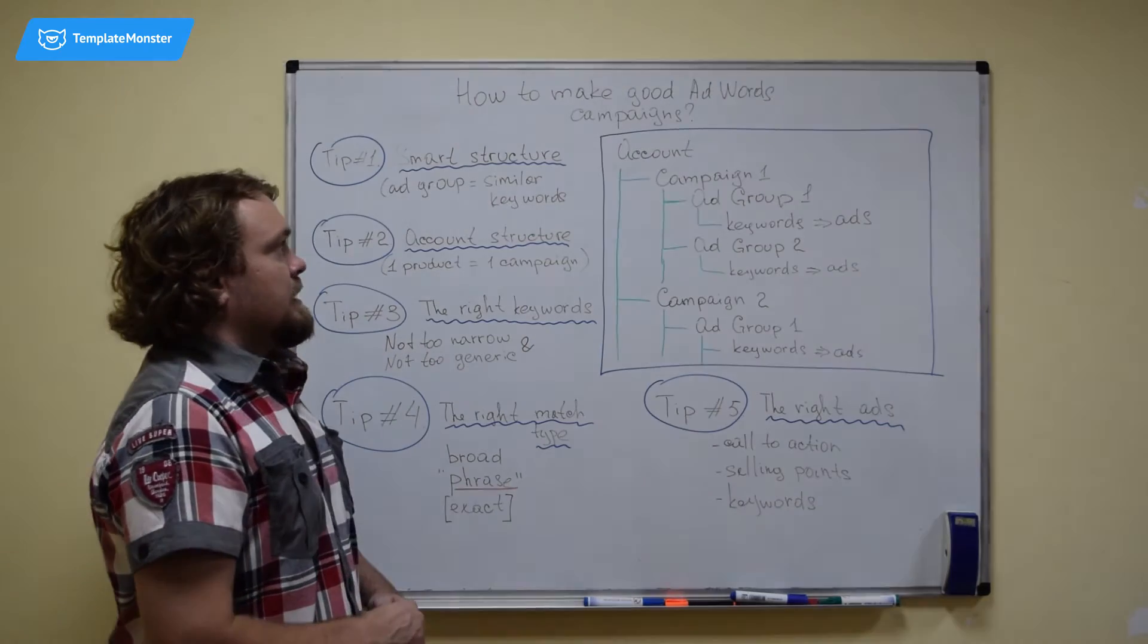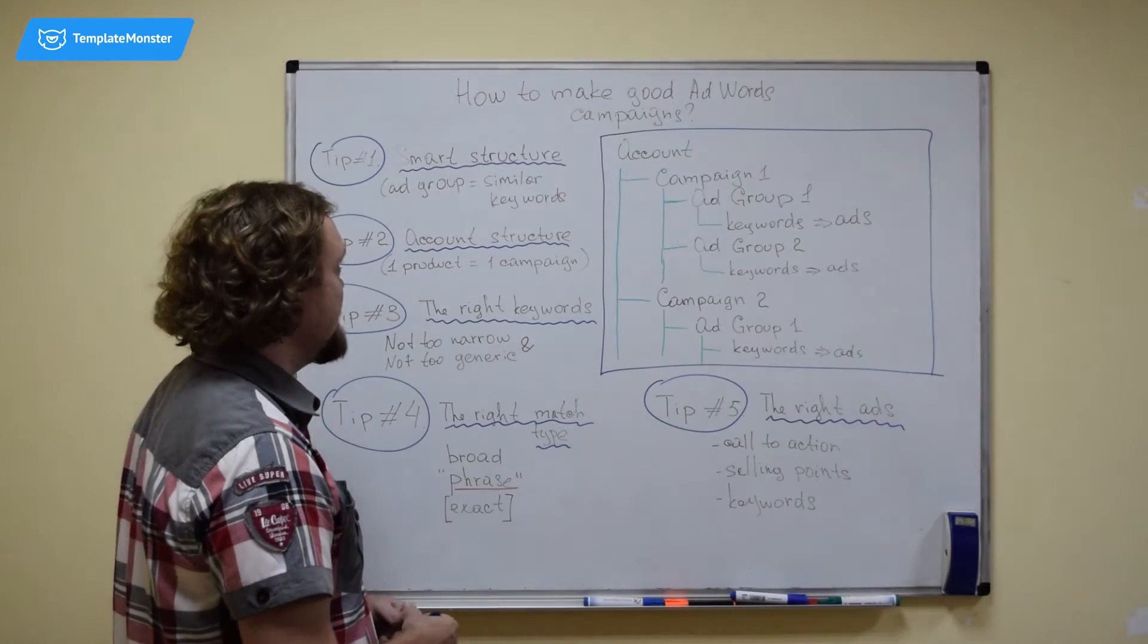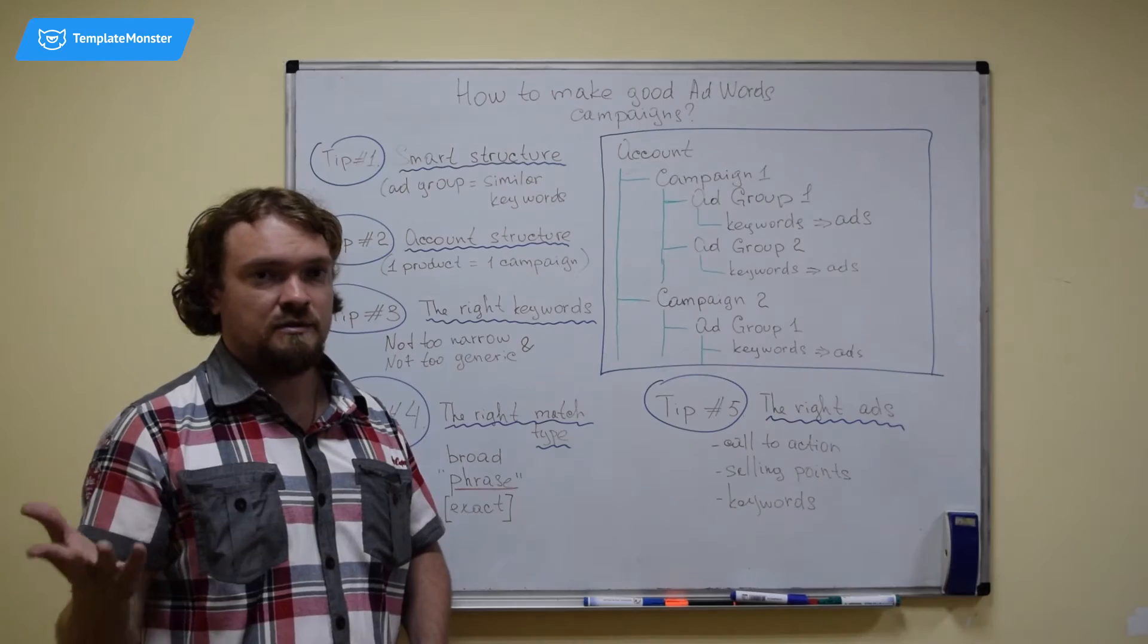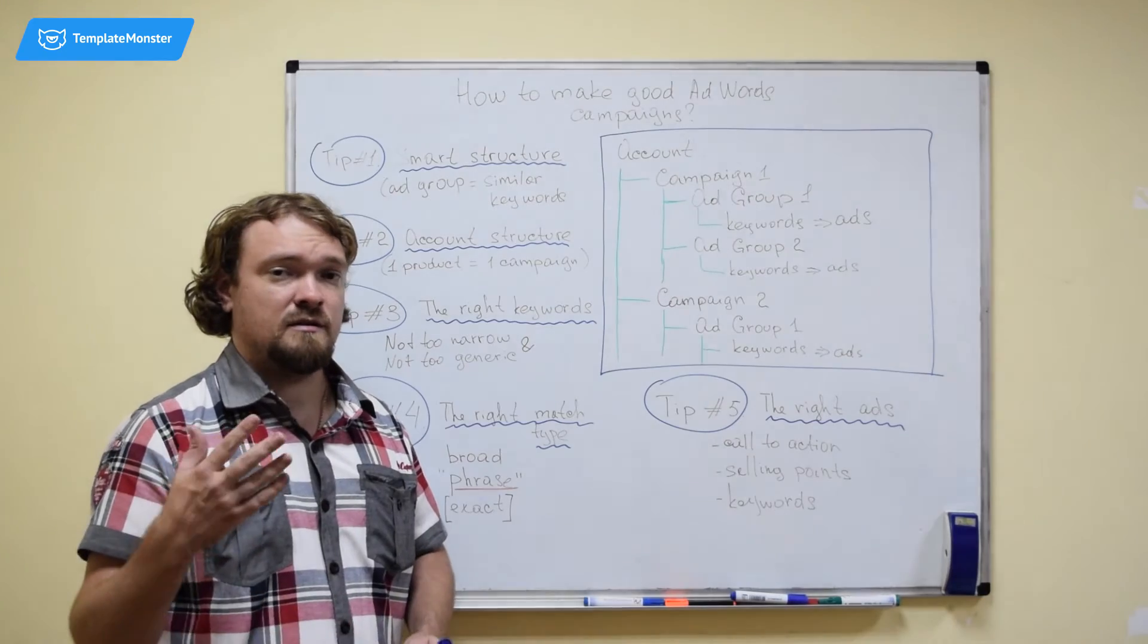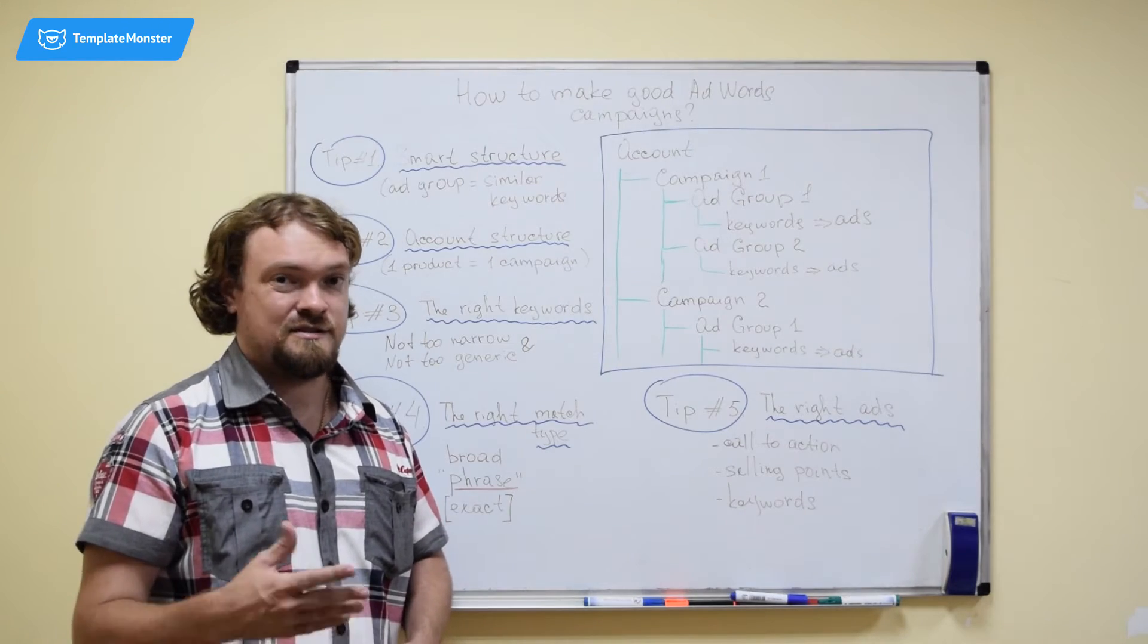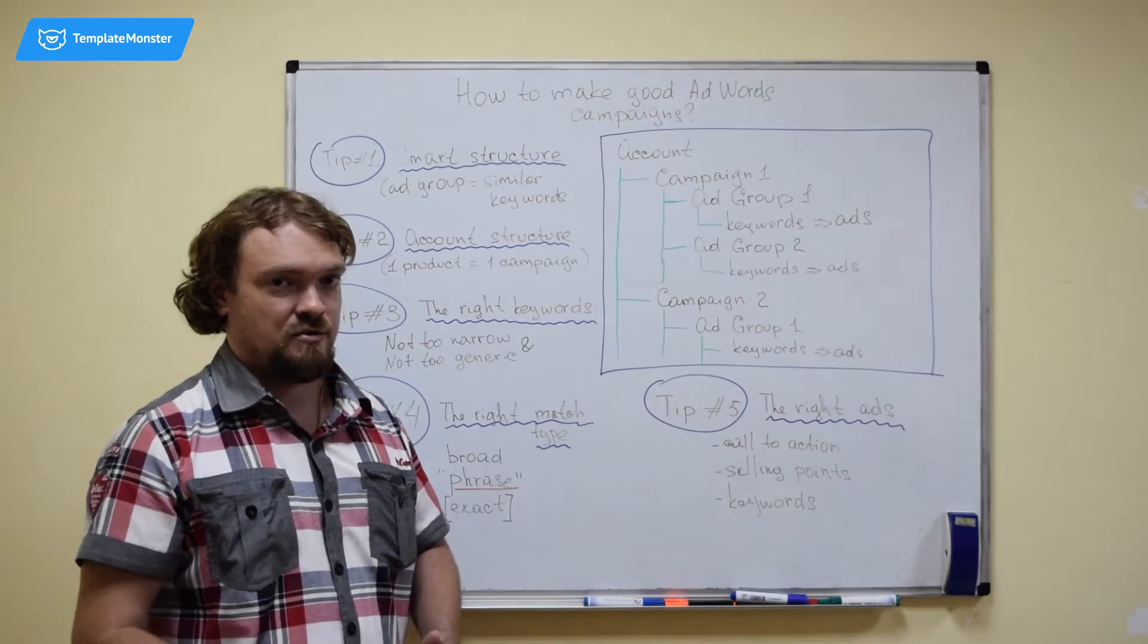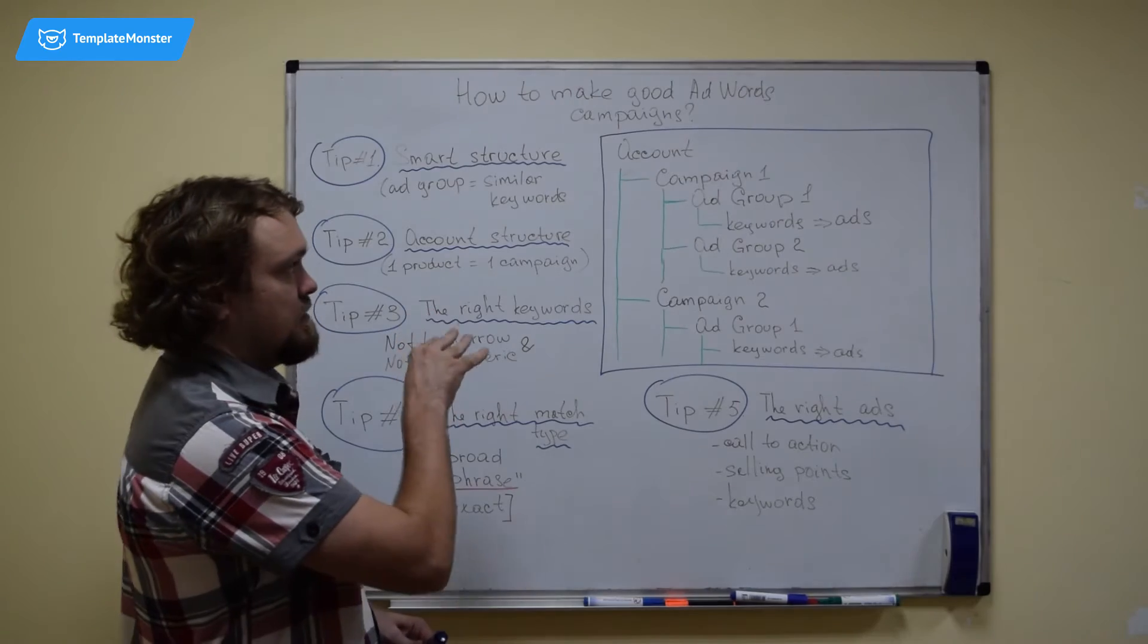So tip number one is structuring your campaign in a smart way. This means that, what I've already mentioned, within ad groups, you should place similar keywords. The keywords they have something in common. They have a lot in common. Because all of these keywords will be eligible to trigger the same ads. And you have to make sure that it is okay to display that ad for either of the keywords in your ad group. That's about it for the campaign structure.